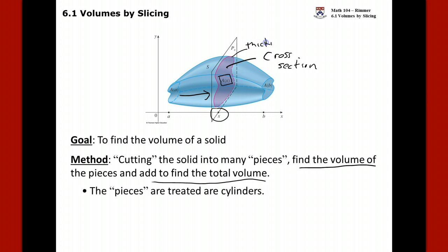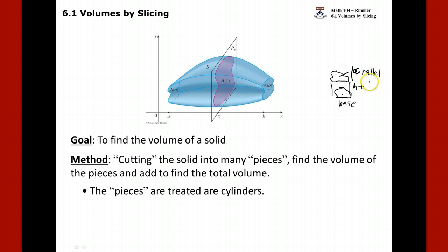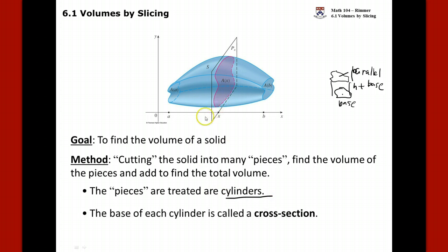These pieces are treated like cylinders with an infinitesimally small thickness. In a cylinder, we have a base shape and a matching shape on top — we find the area of the base and multiply it times the height. We treat each slice as a cylinder where the cross section is the base and the small thickness is the height.